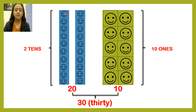Let's go to tens. We have here two groups. Let's go to the first group first. Let's count: one, two, three, four, five, six, seven, eight, nine, ten. Ten.